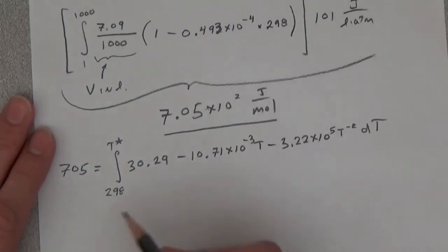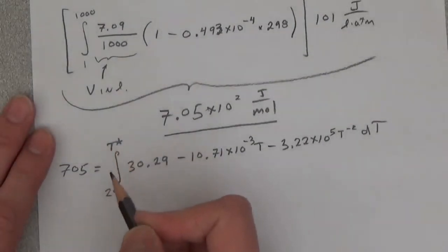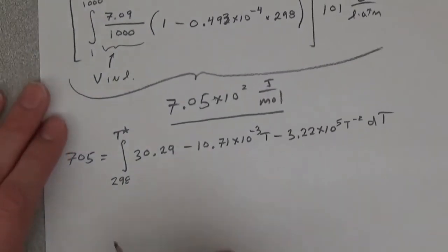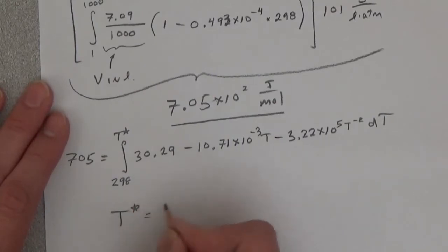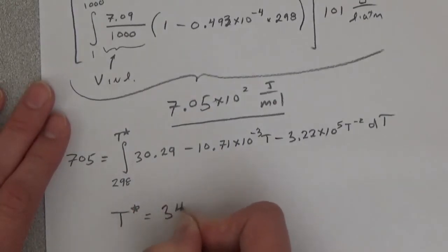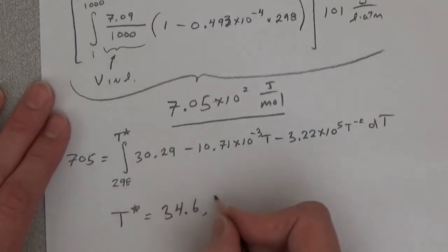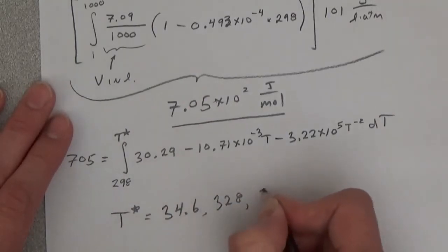And when you solve this, you're going to find three roots. You're going to find T star equals 34.6, 328, and 5,290.